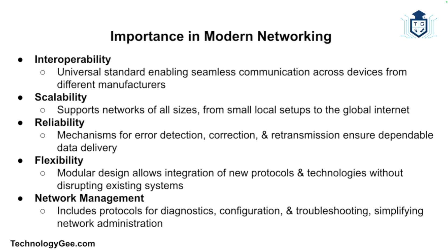TCP/IP is the backbone of the internet and most local networks, providing several critical benefits. Interoperability — TCP/IP ensures that devices from different manufacturers can communicate seamlessly, promoting a universal standard for networking. Scalability — it supports networks of all sizes, from small local networks to the vast global internet. Reliability — it includes mechanisms for error detection, correction, and retransmission. Flexibility — its modular architecture allows development and integration of new protocols without disrupting existing systems. And network management — it includes protocols for diagnostics and configuration, enabling efficient administration and troubleshooting.